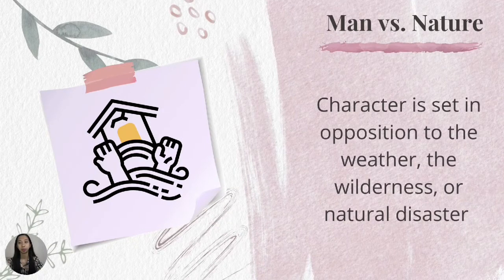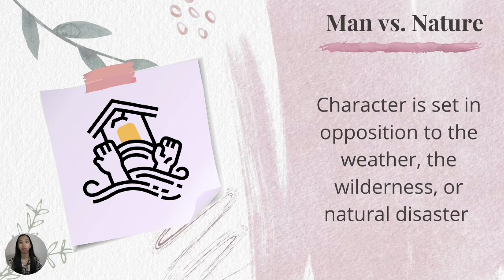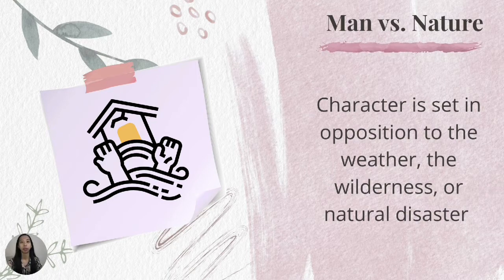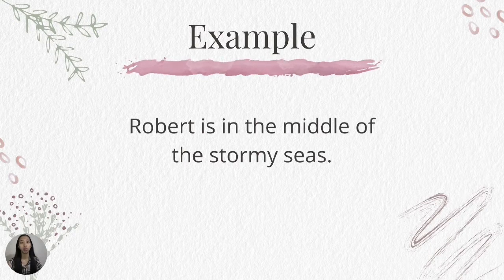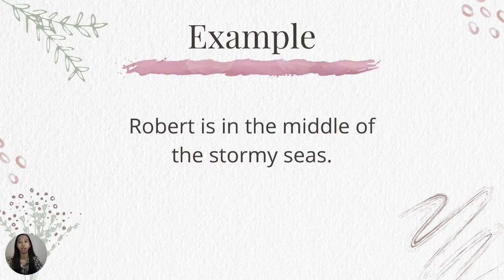Next, we have man versus nature. A character is set in opposition to the weather, the wilderness, or a natural disaster, and it can also involve a struggle against animals. Usually the character is struggling to survive. For example, Robert is in the middle of stormy seas. The conflict is that the character is struggling to survive in the stormy seas. That's an example of man versus nature.